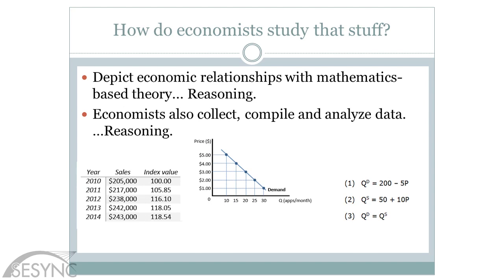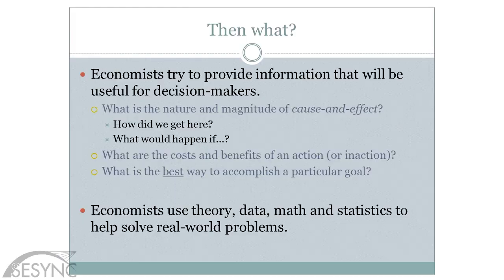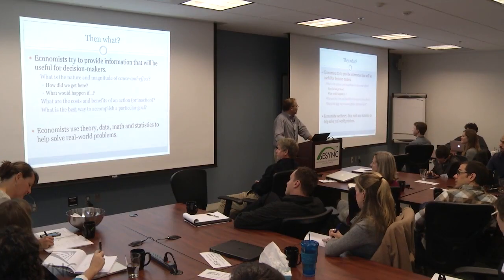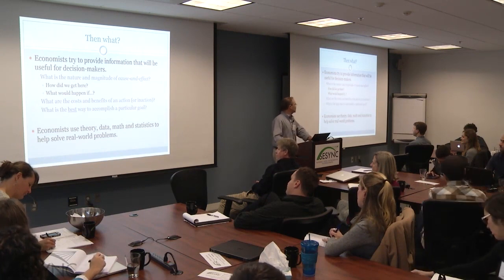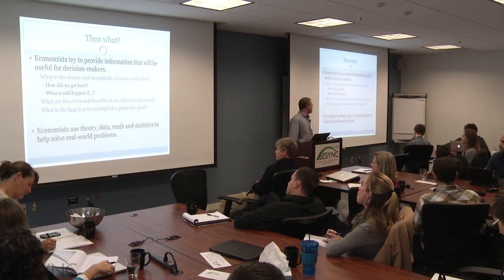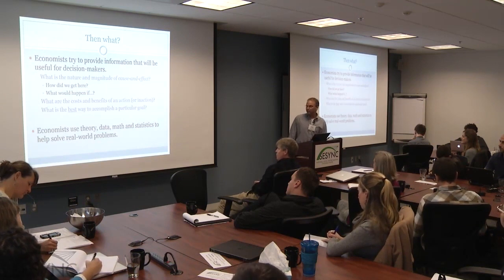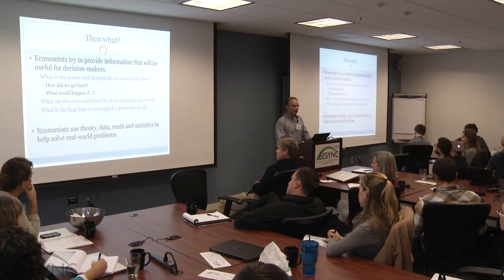Probably the same set of tools that most people in this room use. Then what? We try to provide useful information to decision makers. We kind of live in the world of what-ifs — what might happen if? How did we get here? We look at cause and effect, costs and benefits of an action or inaction, and what's the best way to accomplish a particular goal. We use theory, data, math, and statistics to hopefully make the world a better place and help solve problems.